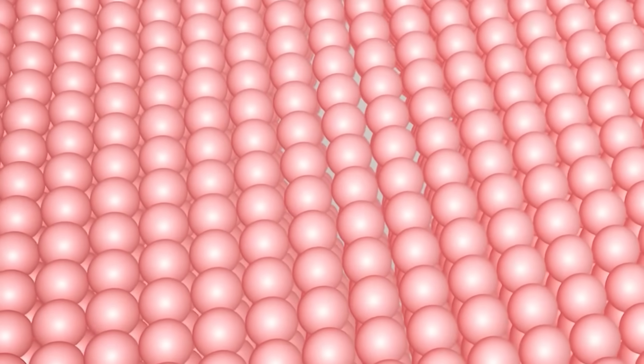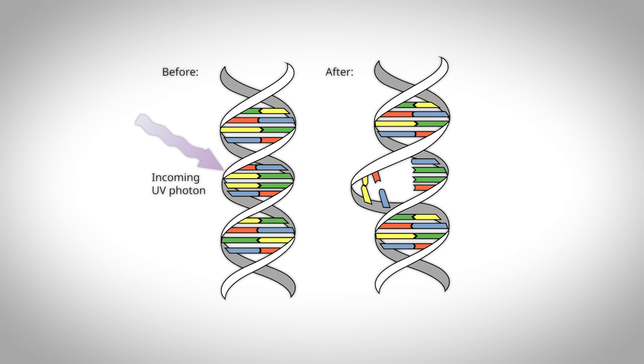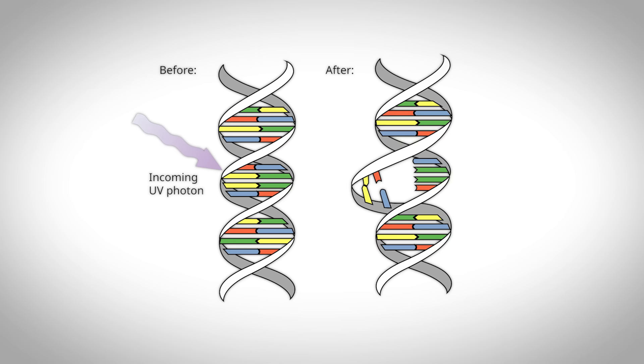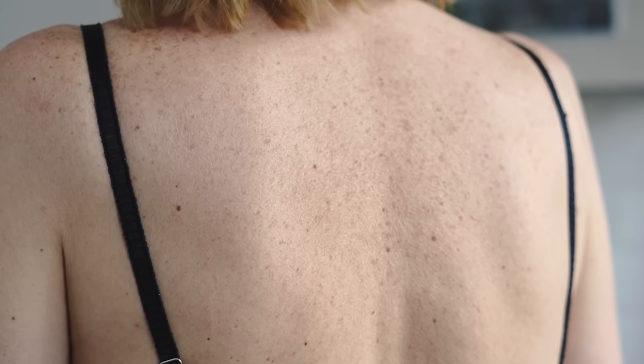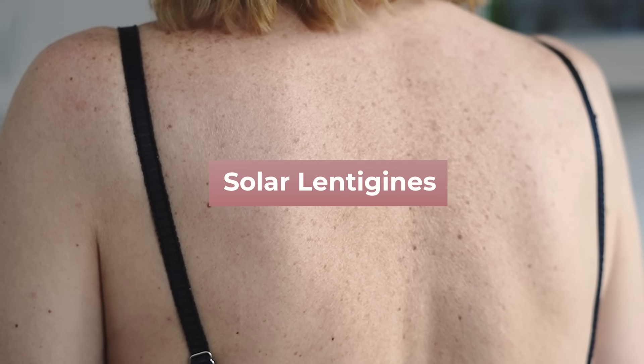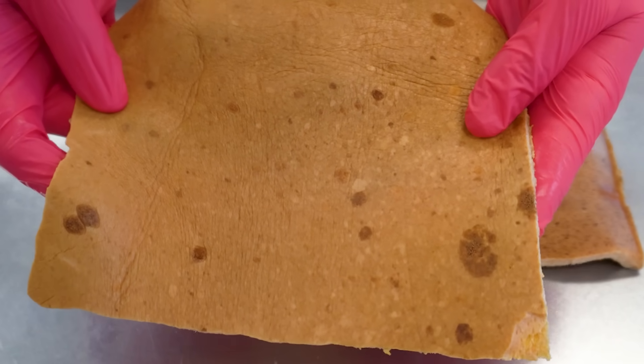UV radiation is energy from the sun that's invisible to us, but it can pack a punch at the cellular level. When UVB rays hit the epidermis, they're absorbed directly by your DNA in the epidermal cells — keratinocytes — but it can also affect the DNA of the melanocytes. This creates these funky bonds called pyrimidine dimers, which basically means that your DNA gets twisted and mutated, which can lead to errors when cells divide. It can also result in age spots, also called solar lentigines, which are patches of hyperpigmentation from the melanocytes misbehaving and producing too much melanin in those areas. Both UVA and UVB contribute to hyperpigmentation and cancer risk over time.